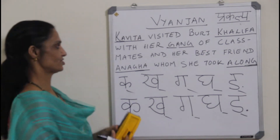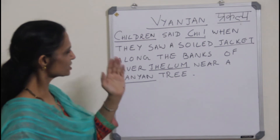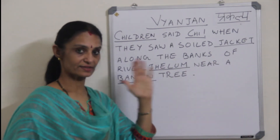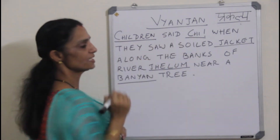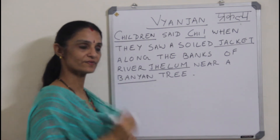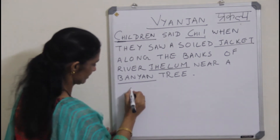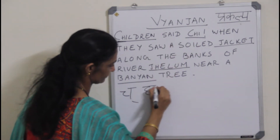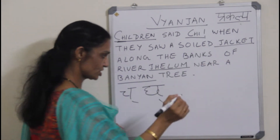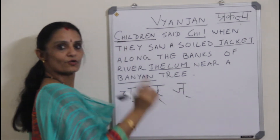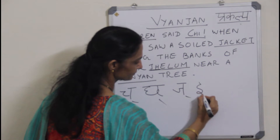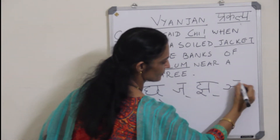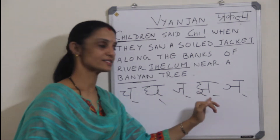Let us proceed to the next set of Vyanjan. The sentence is: 'Children said chi when they saw a soiled jacket along the banks of river Jhedam near a banyan tree.' I have underlined 5 words: children, chi, jacket, Jhedam and banyan. I take Cha from children, Cha from chi, Jh from jacket, Jh from Jhedam, and Nya from banyan. So it is Cha, Chh, Jh, Jh and Nya.